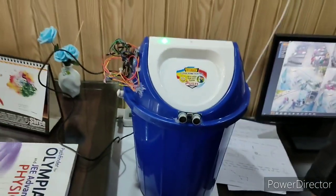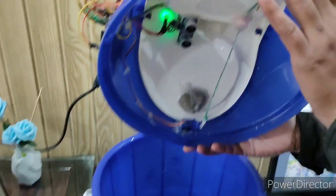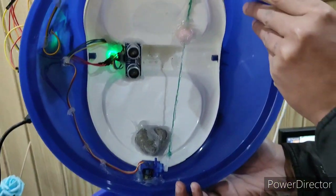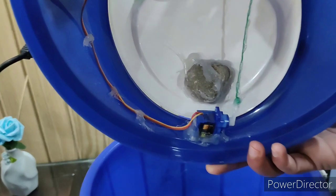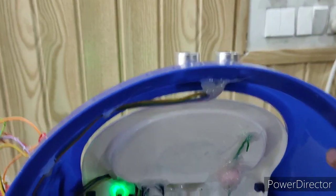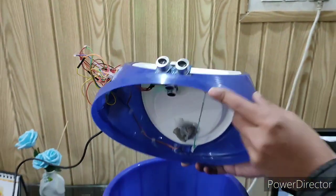We have also used another ultrasonic sensor for garbage level detection which is fitted here inside the lid. You can see it here. We have also used one RGB LED which will be indicating three different levels by its three different colors: red, blue, and green.